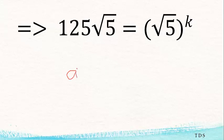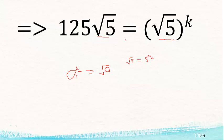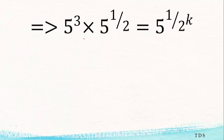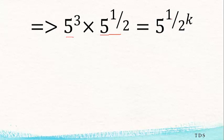Don't forget that e to the power half is the same as the square root of e. So similarly, √5 is the same as 5 to the power half. I'm going to change √5 to 5 to the power half. Also, 125 is 5 times 5 times 5, which is 5³. So we now have 5 to the power k equals 5³ times 5 to the power half.